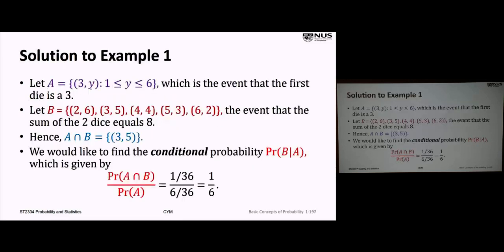Example 2: we roll an unbalanced (loaded) die. The sample space is still {1, 2, 3, 4, 5, 6}, but with unequal probabilities: P(1) = 1/12, P(2) = 1/12, P(3) = 1/6, P(4) = 1/6, P(5) = 1/6, P(6) = 1/3. It's loaded — we're much more likely to get a 6. These probabilities sum to 1.